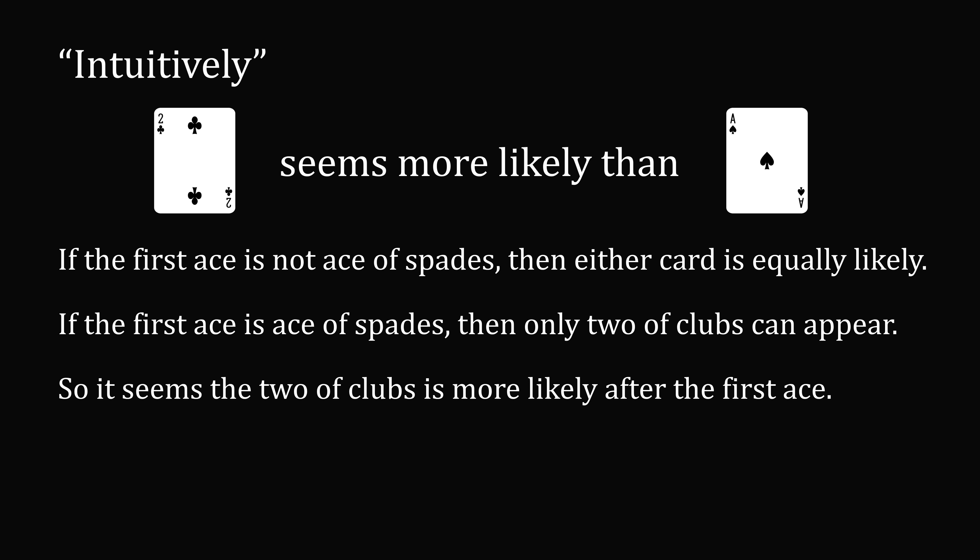So it seems that the two of clubs should be more likely than the first ace. This is what most people think, and this was also my first reaction. But of course, this is wrong! It turns out, both are equally likely.